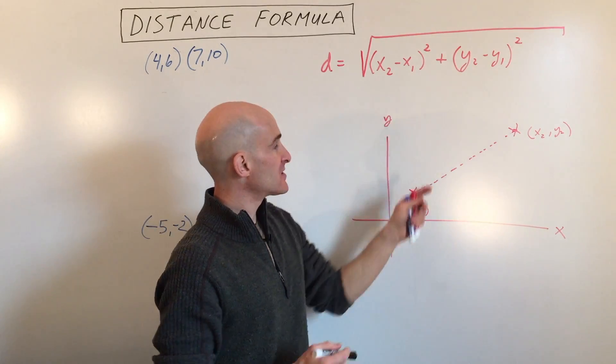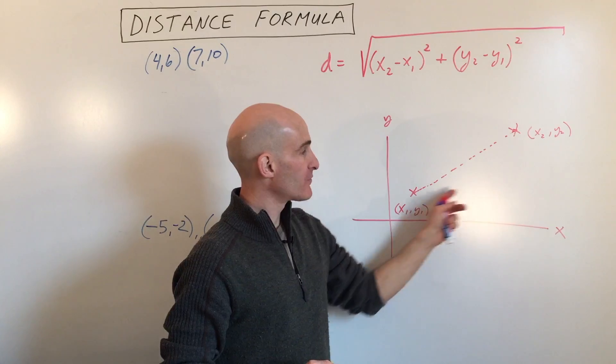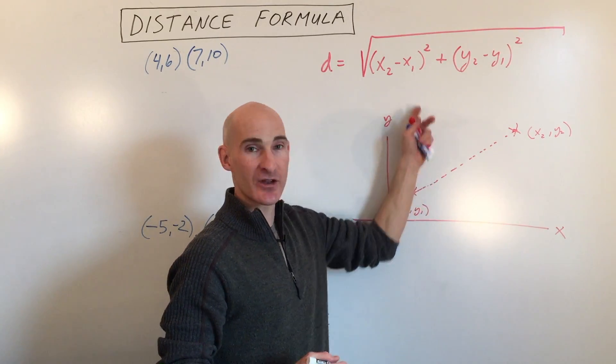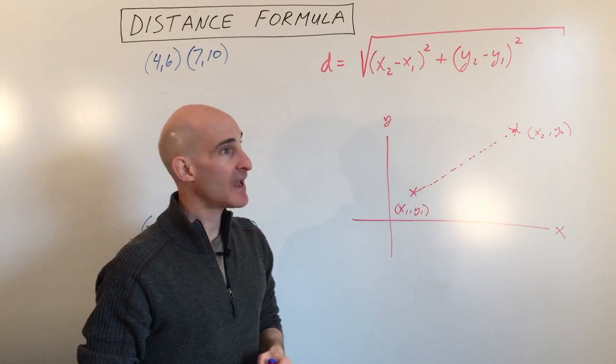It's a formula here, and what it does is it finds the distance between two points. Now, if the points are just horizontal, you can just count the number of spaces, or if they're vertical, you can just count the number of spaces. But when it's on a diagonal like this, the distance formula really comes in handy.